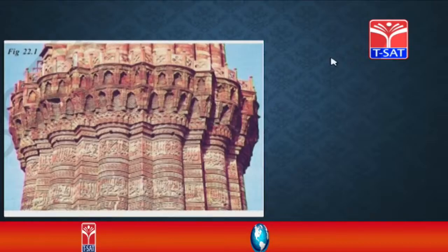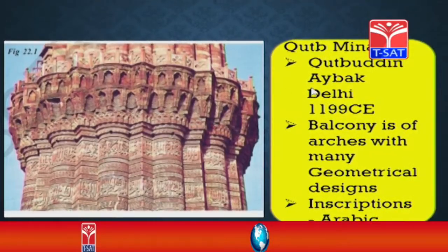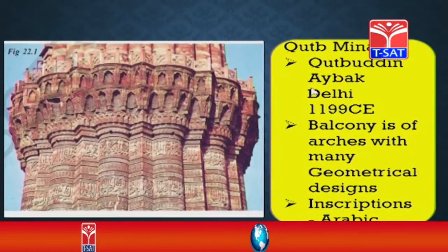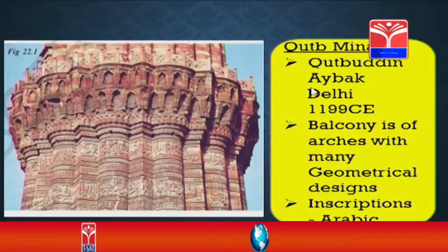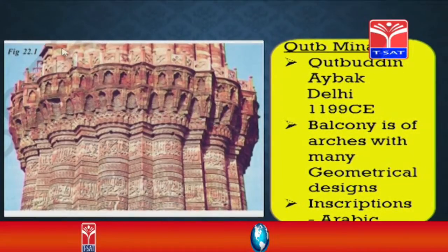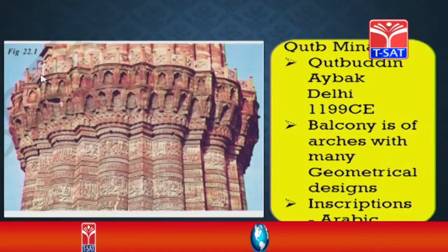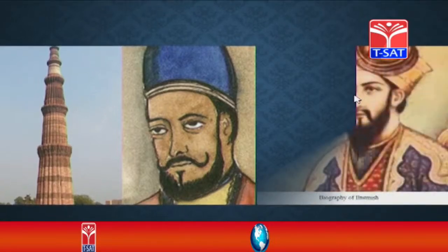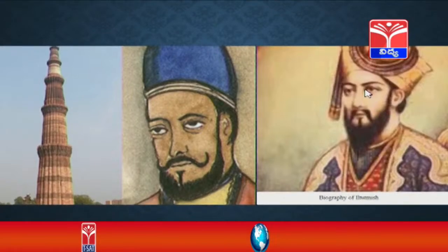Let us see on the screen how it looks. This is part of Qutub Minar. It was constructed by Kutubuddin Aibak at Delhi in the year 1199 CE. He could not complete this construction; his successor Iltutmish completed it. The balcony of arches has many geometrical designs and inscriptions written in Arabic. You can see windows, doors, and inscriptions written in two stripes in Arabic language. It was completed by Sultan Iltutmish.